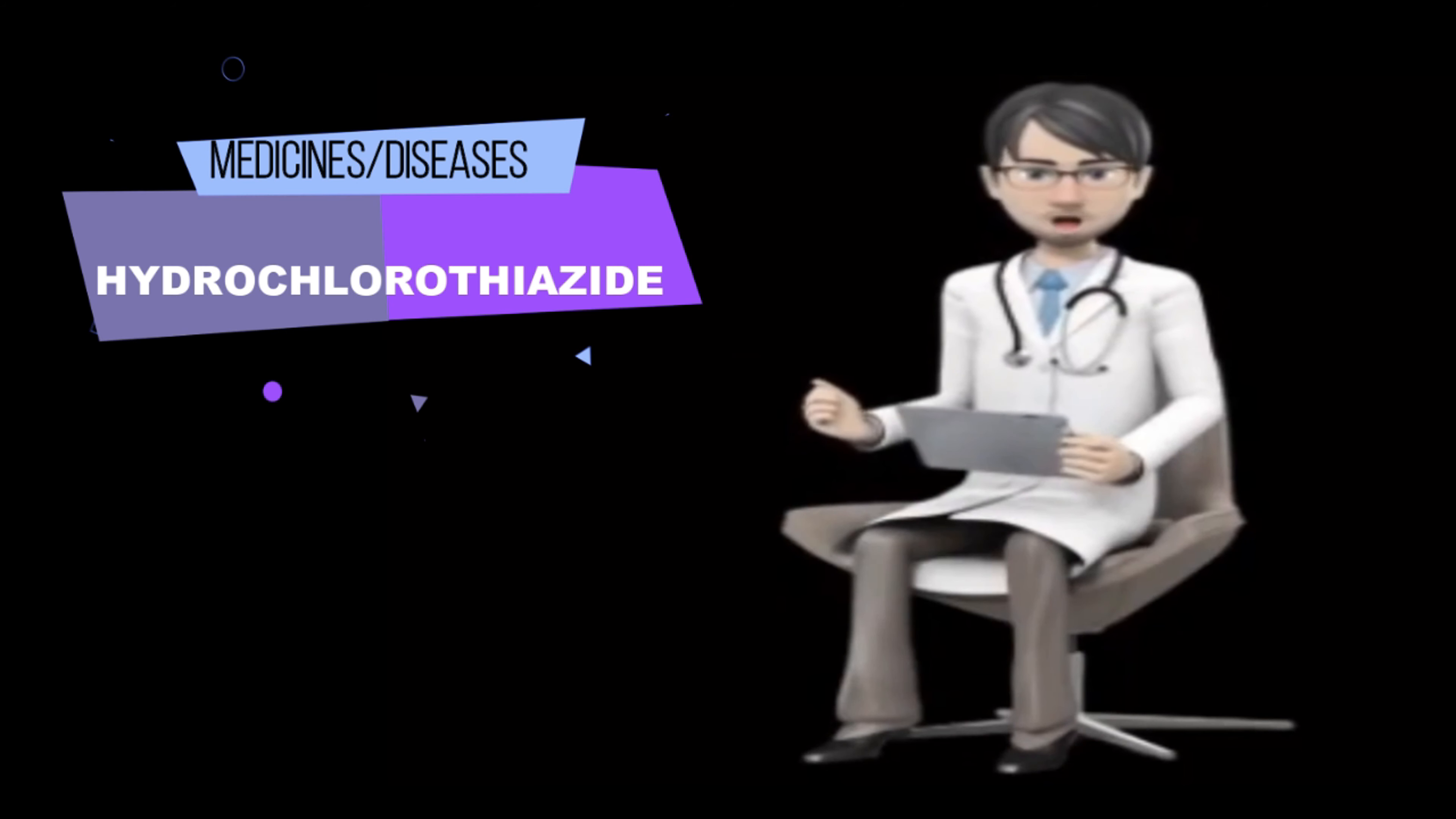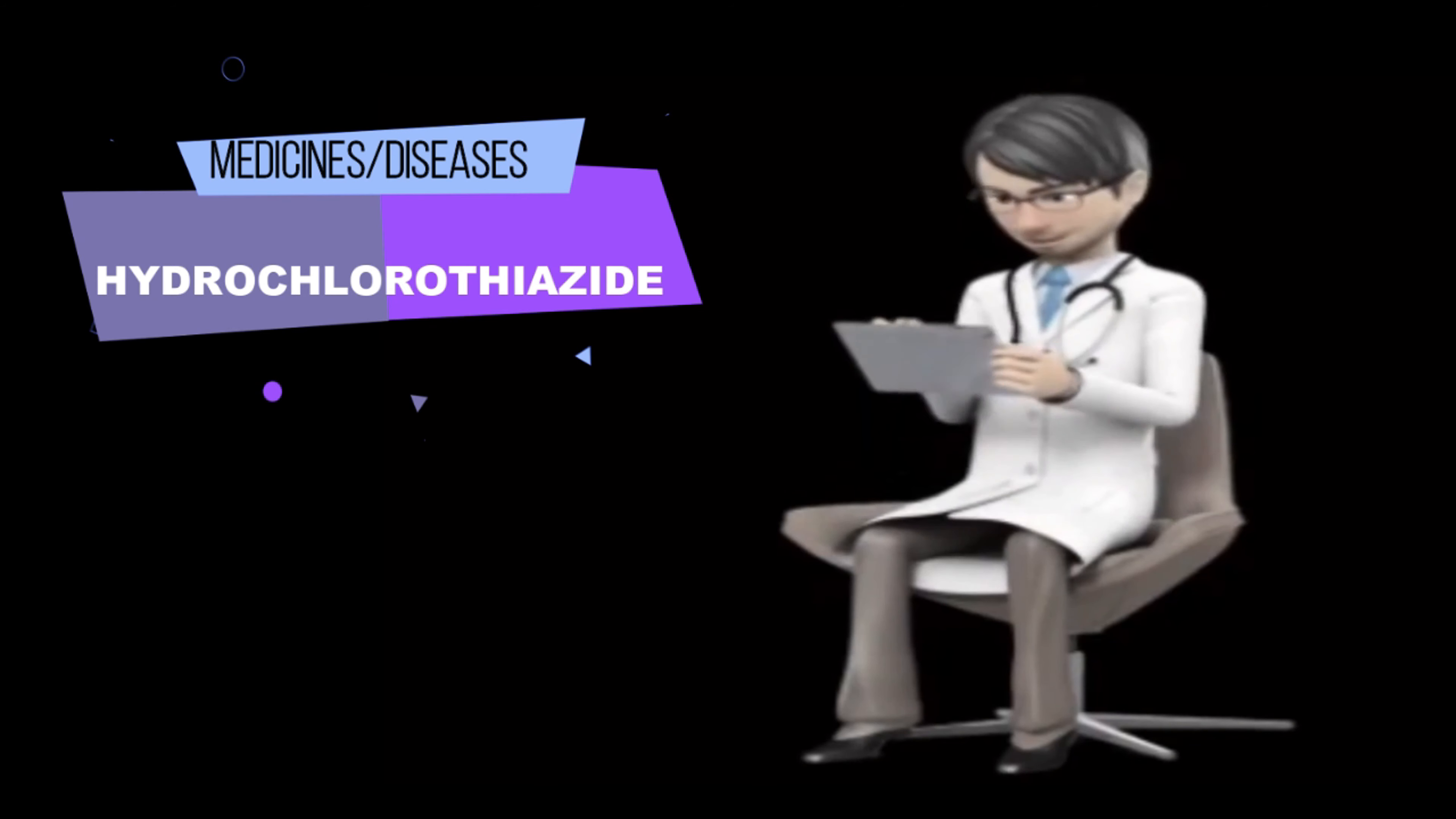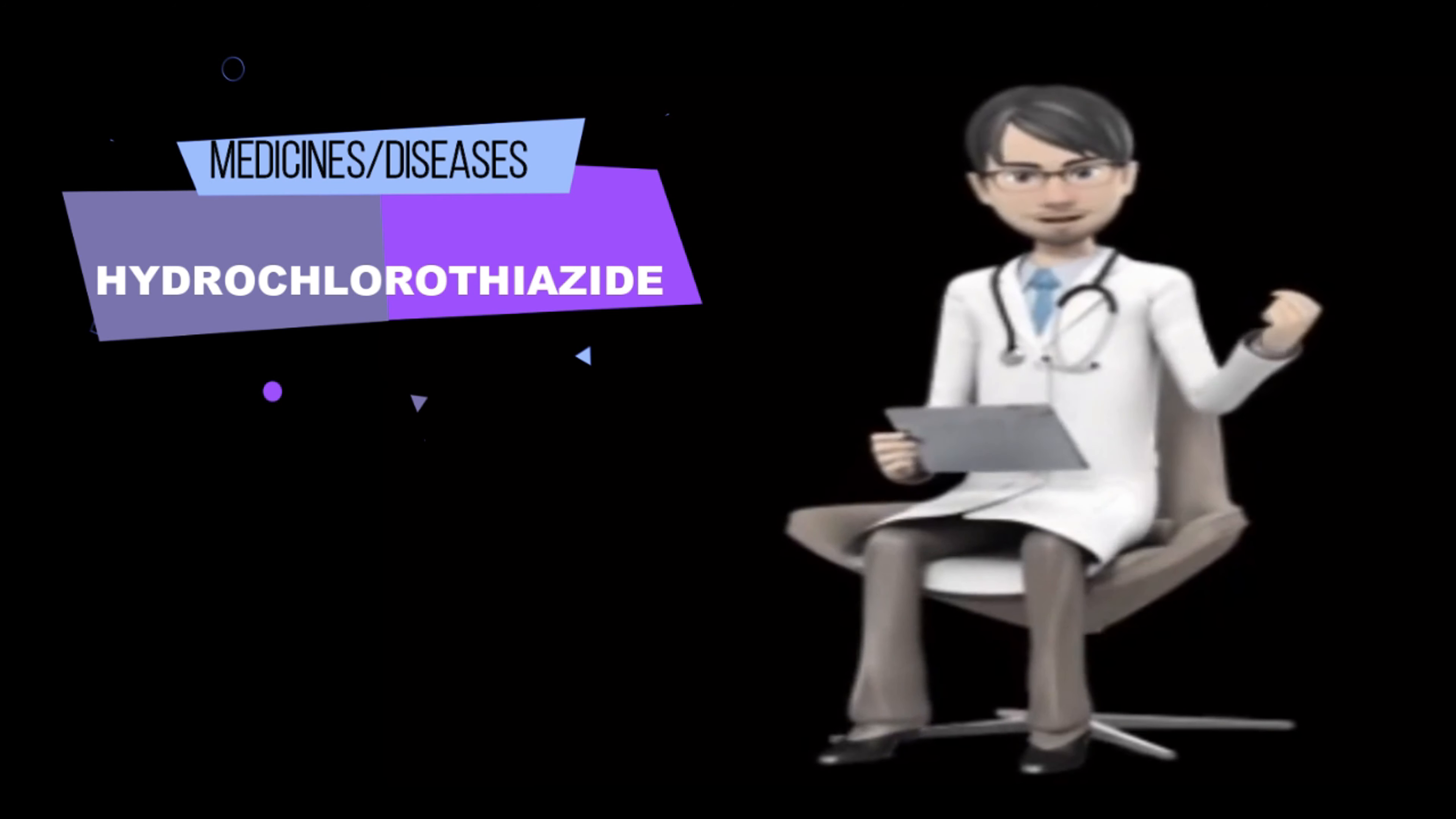Hydrochlorothiazide dosing information. Usual adult dose for edema. Usual dose, 25 mg to 100 mg orally once or twice daily. Comments: Some patients respond to intermittent therapy, administration on alternate days or on 3 to 5 days each week. Excessive response and undesirable electrolyte imbalance are less likely to occur with intermittent dosing.